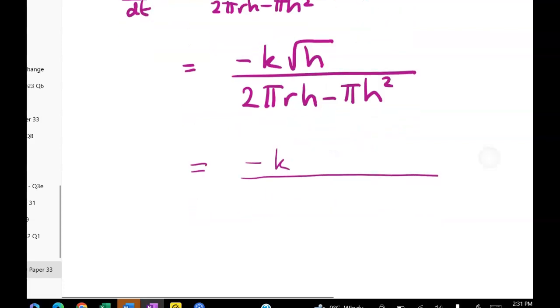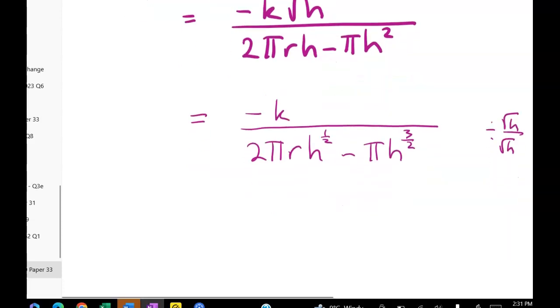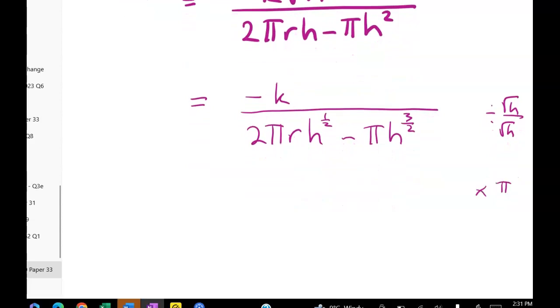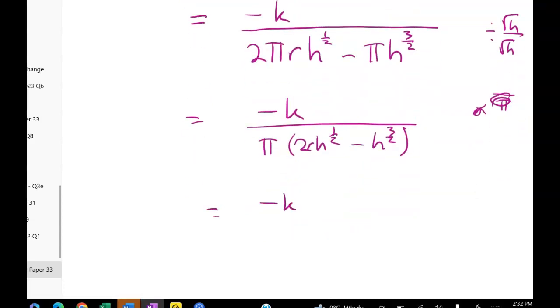So this is negative K. I'm going to do this really slowly. You could do this in one step in the exam. So negative K over two pi R to the H to the one half minus pi H to the three over two. So that's dividing by root H over root H. And now I'm going to times by... what am I going to do now? Times through by... We've got negative K over pi into two pi 2R H to the one half minus H to the three over two. Which gives me negative K on pi over this.